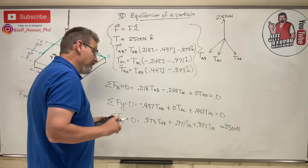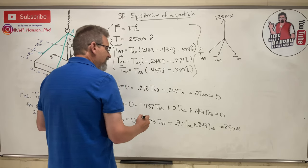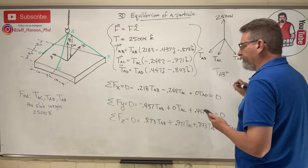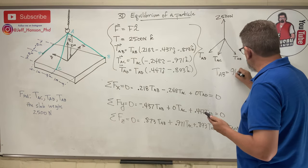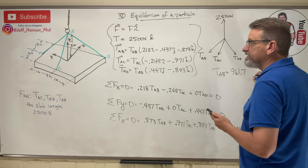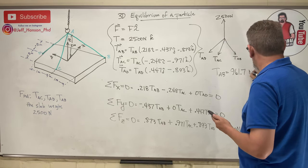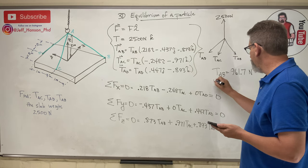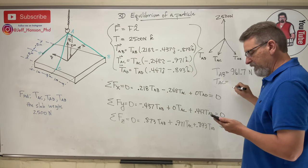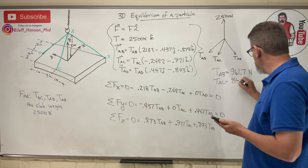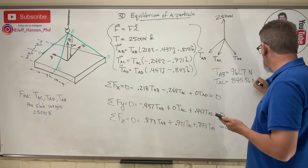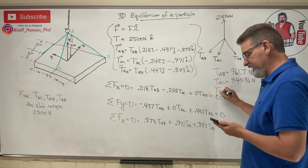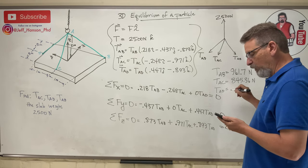Oh, look at there. X, which is the first one I put in, TAB, it gives me all these answers. TAB is equal to 961.7. And that is, this was in newtons, wasn't it? And then next answer down, the TAC is 845.36. And then the last one, 940. So TAD equals 940.2.